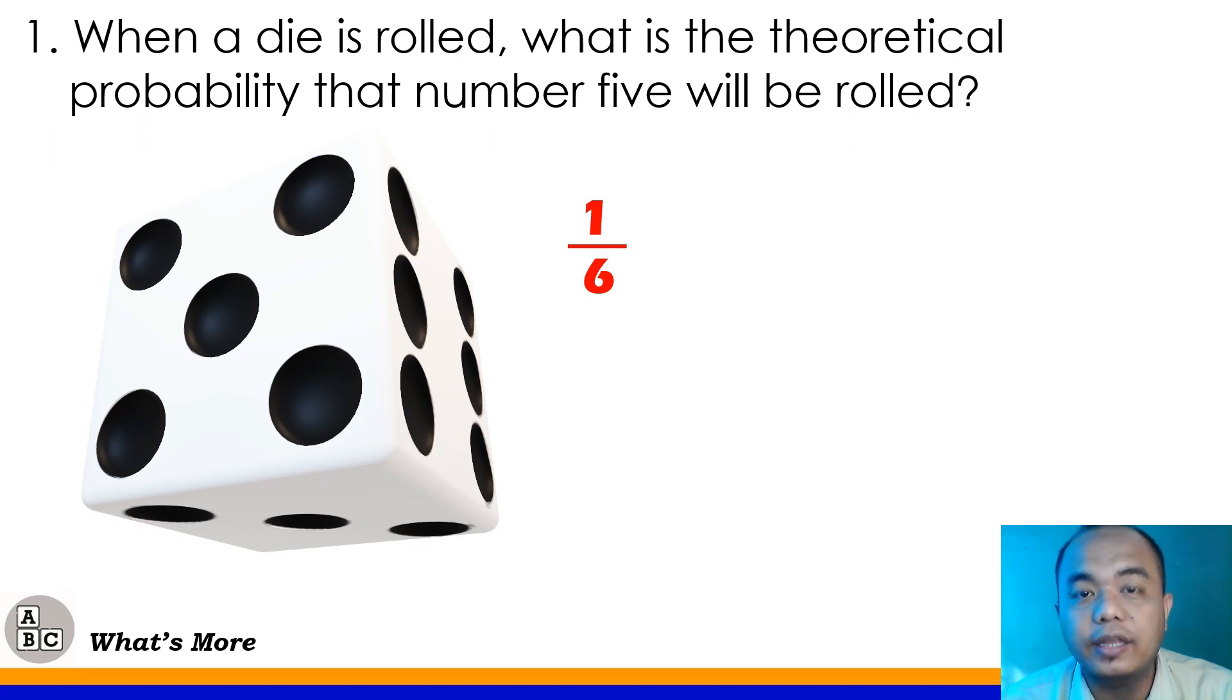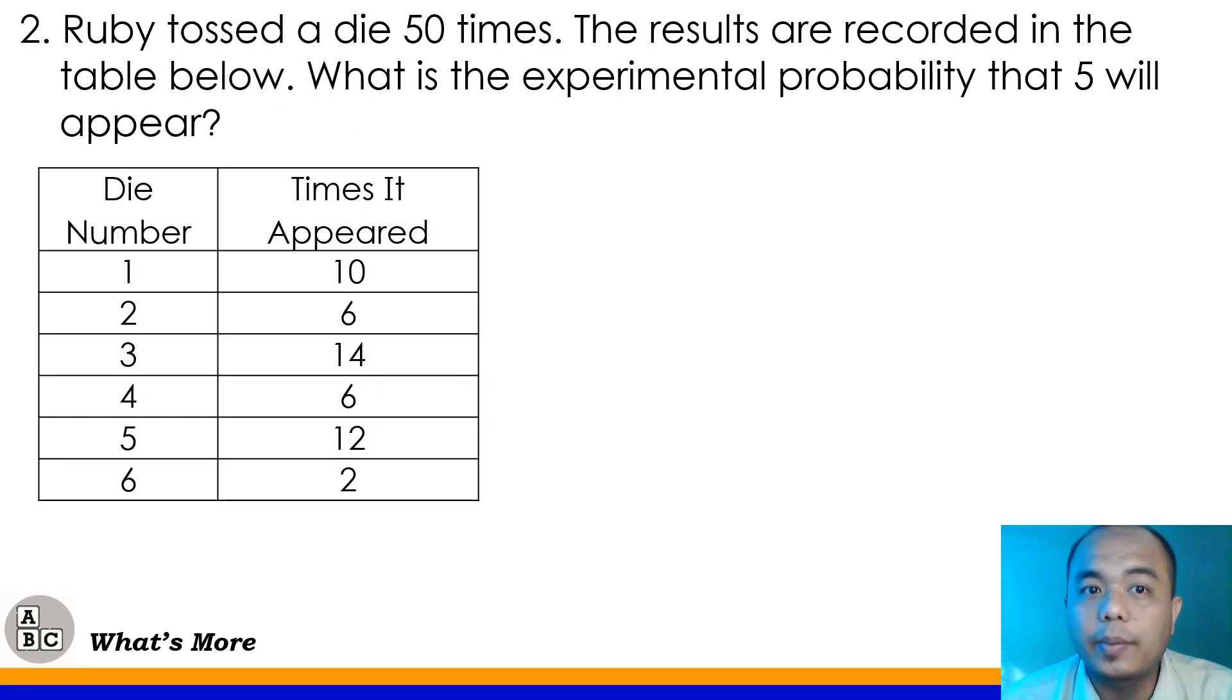You can also convert that to percent form. So, 1 divided by 6 times 100 will give you about 16.67%. So, the number 5 appearing when the die is rolled has 1/6 or 16.67% probability.